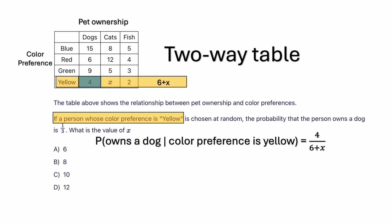The probability that a person owns a dog given that their color preference is yellow is already given as one-third, so we set one-third equal to 4 out of (6 plus x). Now we have an algebraic equation. Cross-multiplying gives us 6 plus x equals 12, so x is equal to 6.